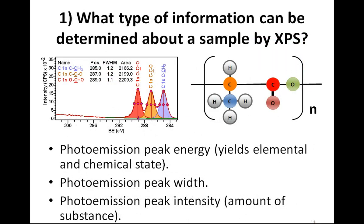Once we have selected an appropriate sample, the next question is what type of information can we determine by XPS? Arguably one of the most widely used applications must be polymer chemistry, which provides a nice example of the available information. By working out the position of the peaks, we can see different chemical states for carbon within the polymer — carbon bonded to carbon and hydrogen, carbon bonded to oxygen, or carbon double-bonded to oxygen. Each colour in the polymer structure corresponds to a colour in the spectrum, providing chemical state information based on peak energy.